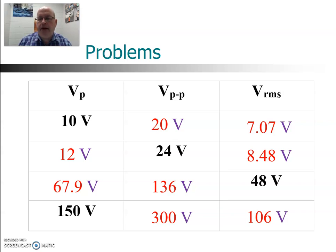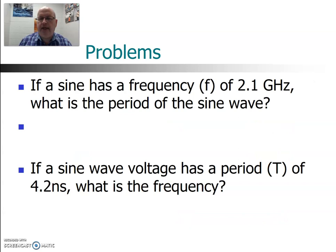All right, so that was the amplitude. Let's look at what happens horizontally in the time axis, converting from frequency to period and period to frequency. Again, pause the video here, and then I will show you the answers.